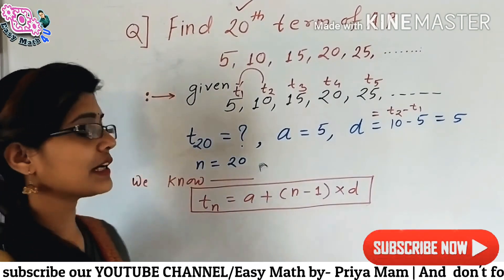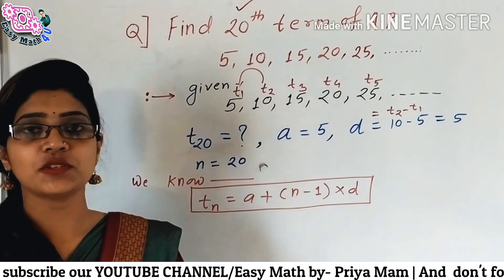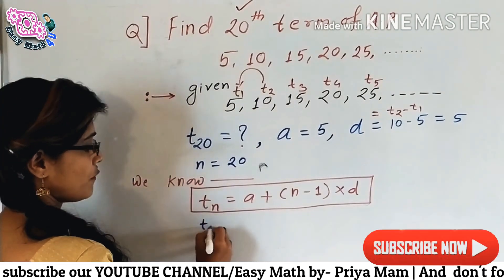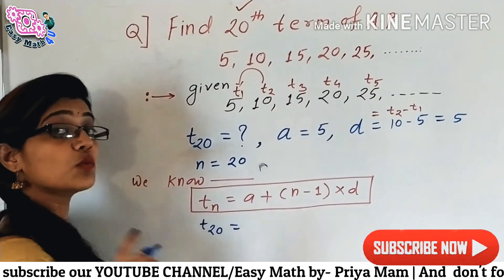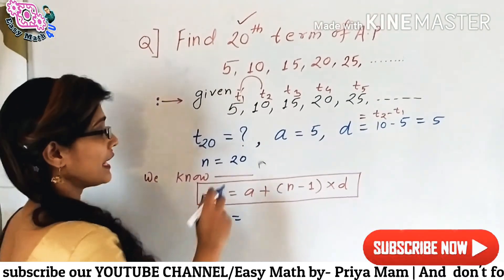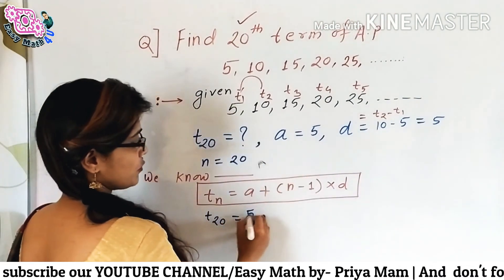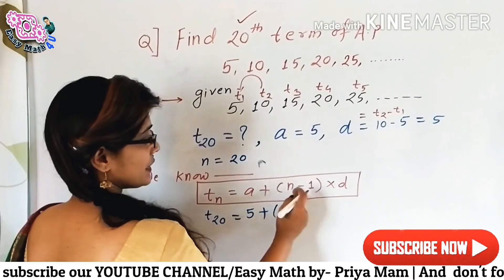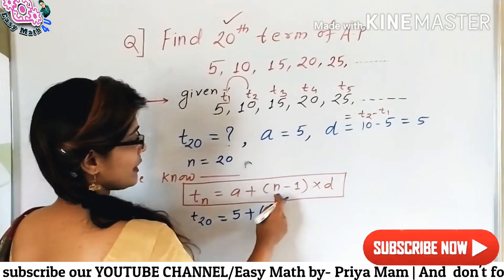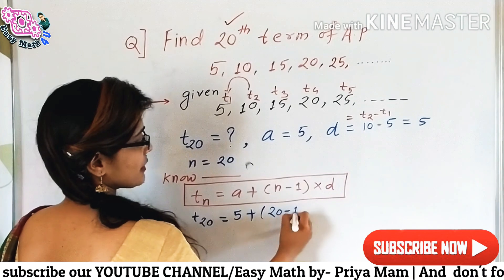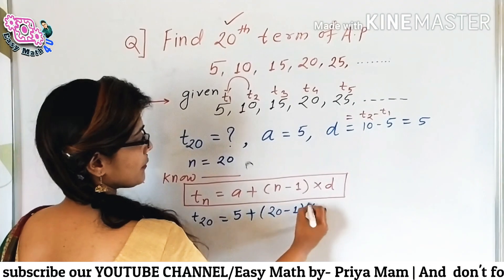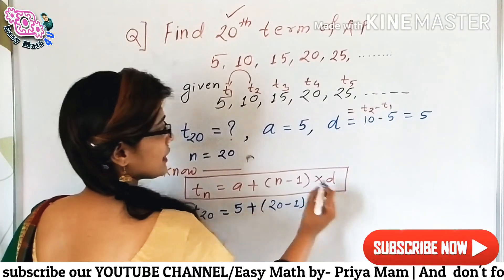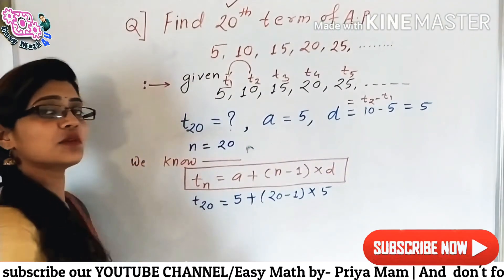We know T of N is equal to A plus N minus 1 of D. अभी आपको क्या करना है? You have to put all the values into your formula. So, T of 20 is equal to — what is the value of A? A is 5, put here 5. Then N minus 1 — what is the value of N? 20 minus 1, multiply by D. What is D? D अभी calculate किया है, D is 5.